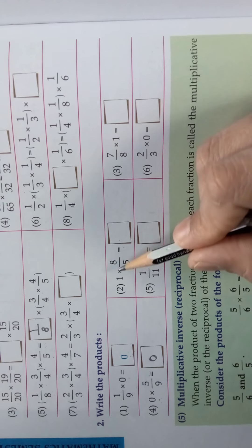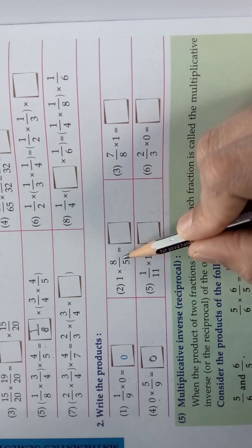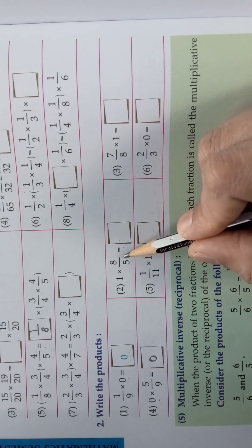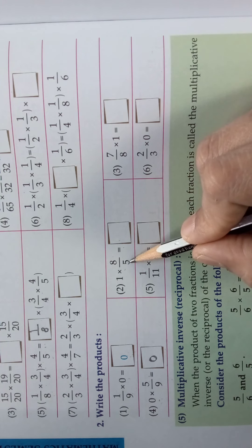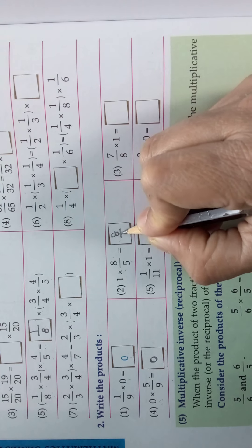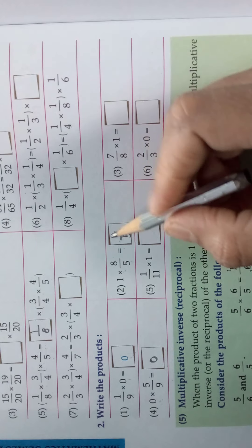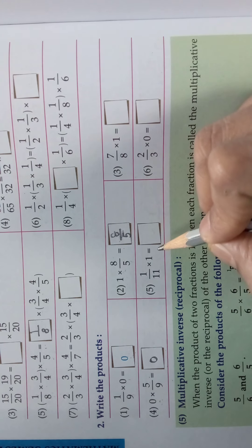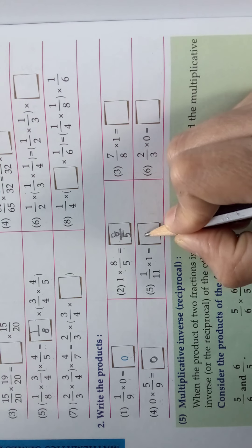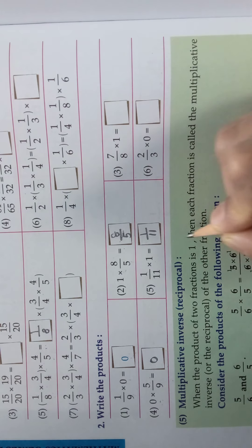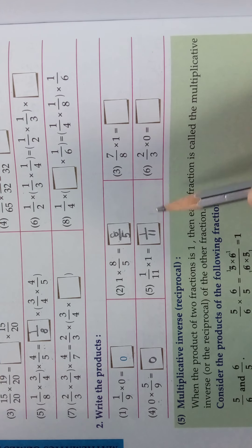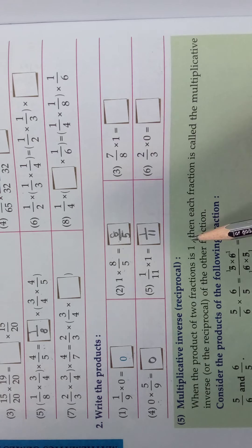Look here at the second one: 1 × 8/5. This is the property of 1 — 1 × 8/5 is nothing but 8/5. If you multiply any number by 1, you get the same number itself. See, 1/11 × 1 is 1/11. These are all the properties for whole numbers and natural numbers alike.